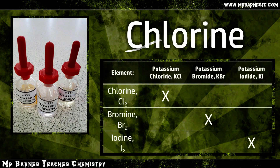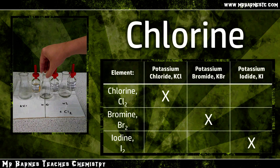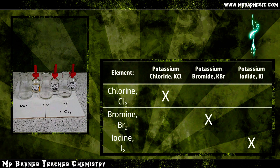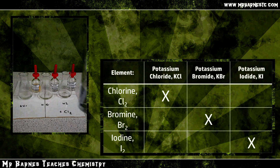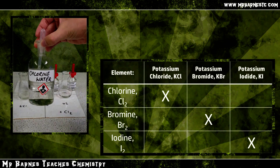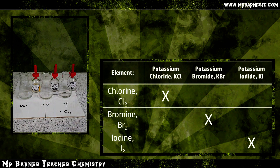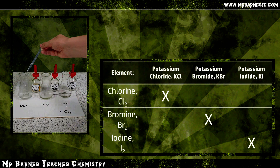If we start off with chlorine — chlorine is a colourless liquid — what I'm going to do is put chlorine into potassium chloride, potassium bromide and potassium iodide, all three of which are also colourless solutions. As I said, when you put chlorine into potassium chloride nothing will happen, so let's have a look at what happens when we put chlorine into potassium bromide.